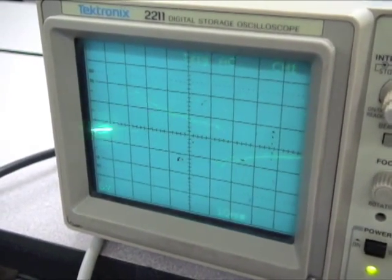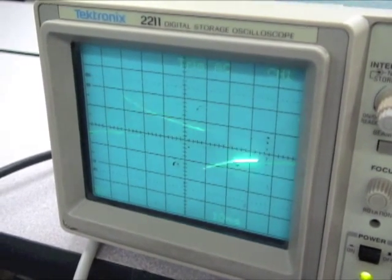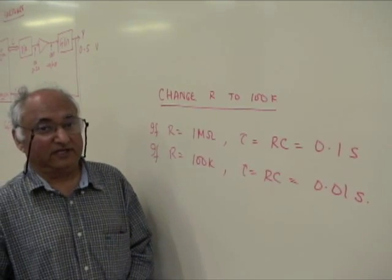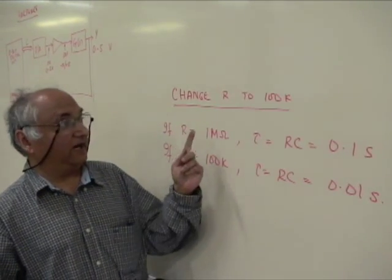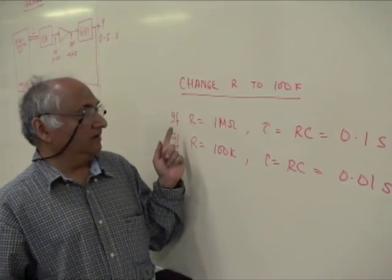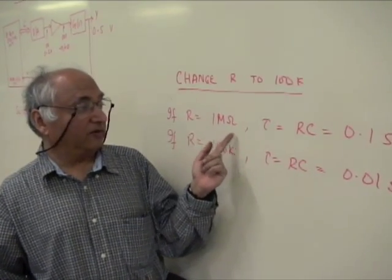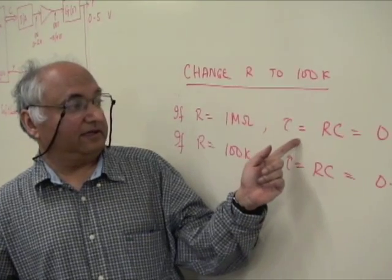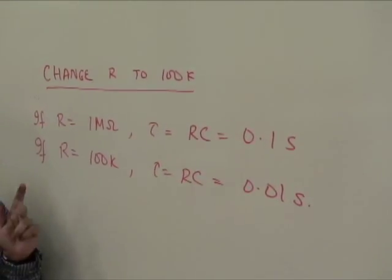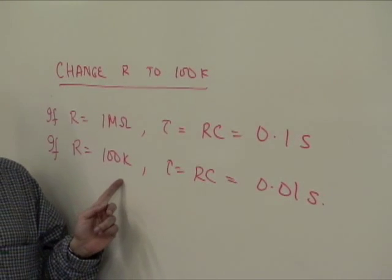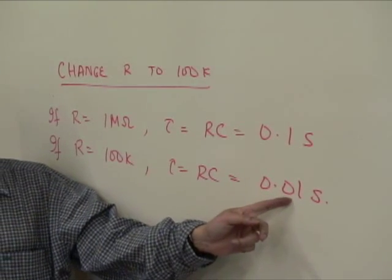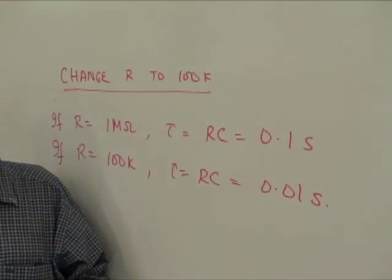We change the resistance R in this segment. Let's say, for example, we change R to 100K. Look at the time constant RC: when R was 1 megaohm, RC was 0.1 seconds. If we reduce R to 100K, the time constant changes to 0.01 seconds, so the open loop system time constant is reduced and the speed would be 10 times as fast.